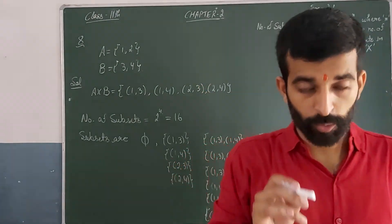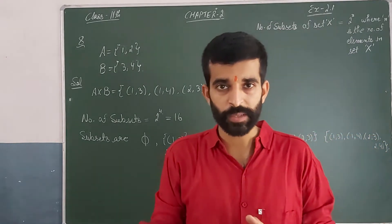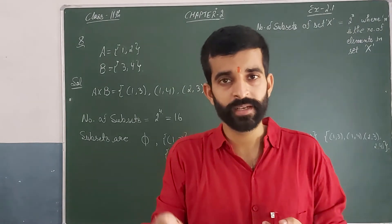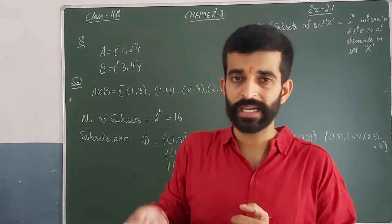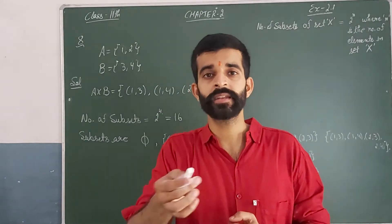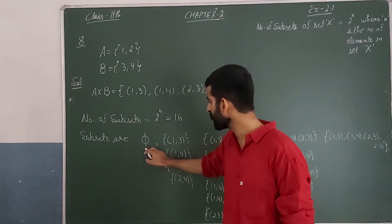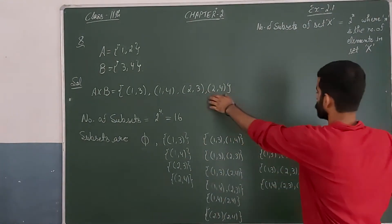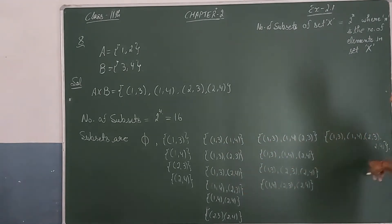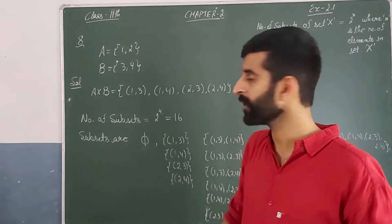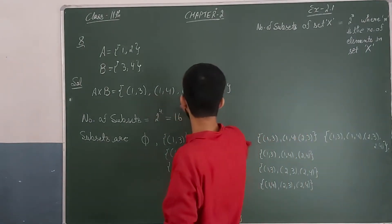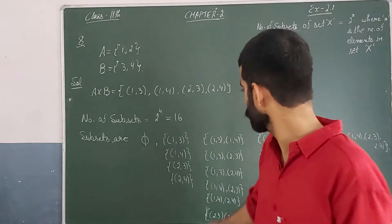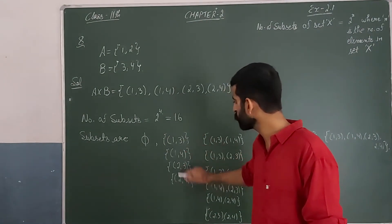So if you have A cross B, you need to find all the subsets. Now you know that 2 sets are always subsets: one is the set itself and the other one is the null set. So null set is one subset. Now the elements are (1,3), (1,4), (2,3), and (2,4). All the subsets will include these 4 elements. So first (1,3), then (1,4), (2,3), and (2,4).